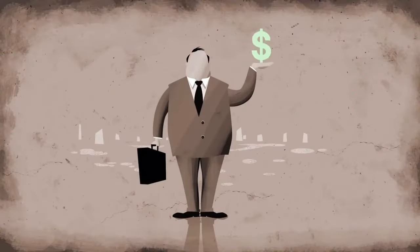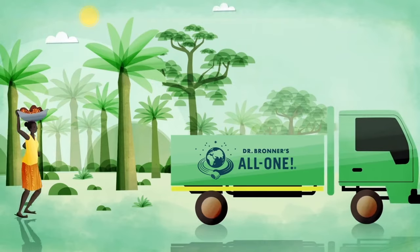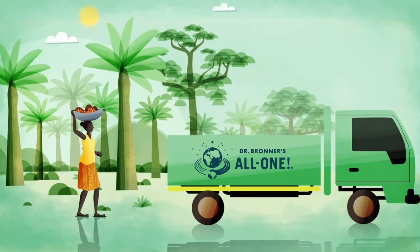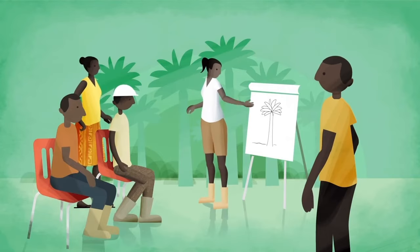Rather than support a supply chain motivated only by profit, we created a new one that empowered palm farming communities in Ghana, where no rainforest land had to be cleared to work. We worked with farmers to grow organically and promote soil quality.